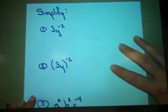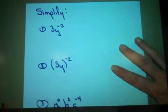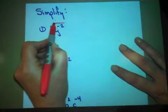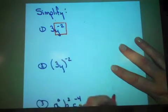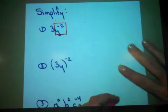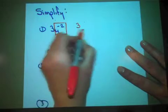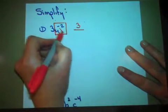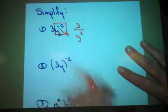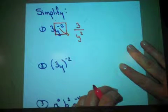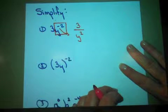Now let's simplify some problems. We want to simplify 3y to the negative 2 power. Notice that the exponent is only on the y value — it's not affecting the 3. So the first thing we need to do is put the 3 in the numerator, and then this negative exponent is going to make the y squared go to the denominator. Will that simplify any further? No, it won't. So we're done.